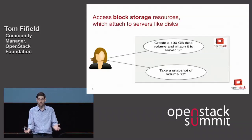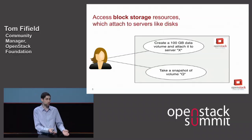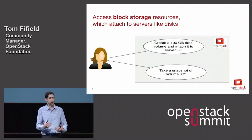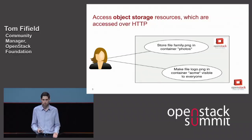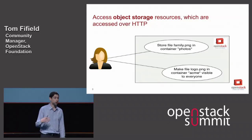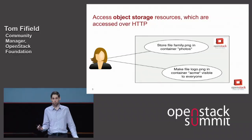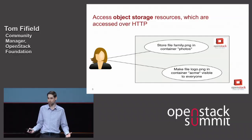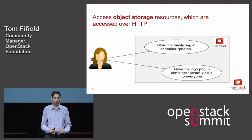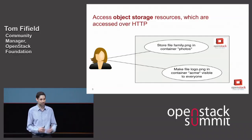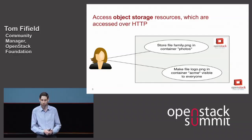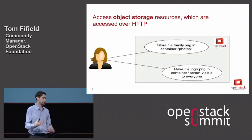With block storage, choose a 100-gigabyte volume and attach it to a particular server — easy. Or take a snapshot of that volume and back it up to object storage. With object storage, it's really easy to store photos of your cats — just a single command, an API call, or a dashboard click to upload into OpenStack. And it's easy to turn around and make that content available to the world.